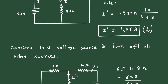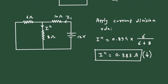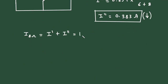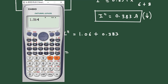The direction of I prime is downward and the direction of I double prime is also downward, so the resultant current is I prime plus I double prime since both directions are the same. Therefore, I through the 8 Ohm = 1.06 + 0.383 = 1.443 ampere.